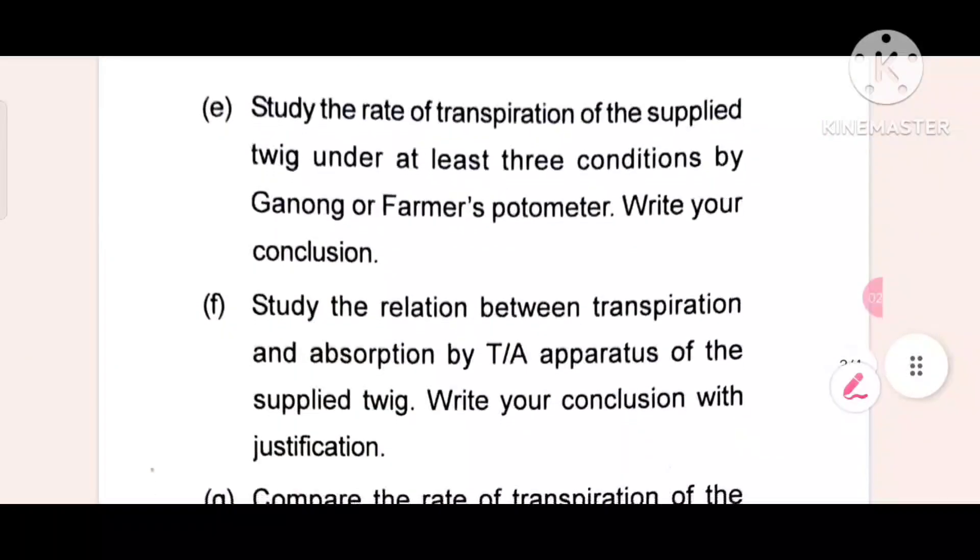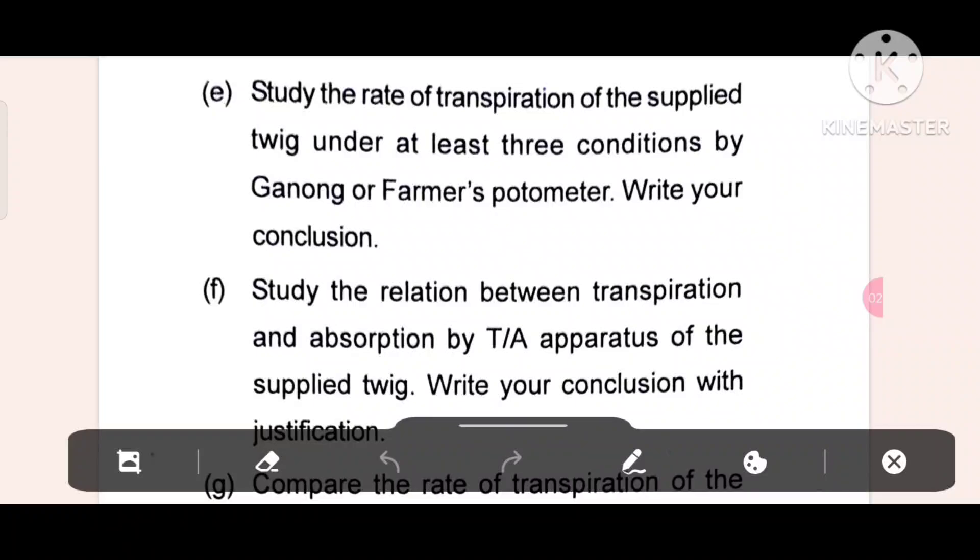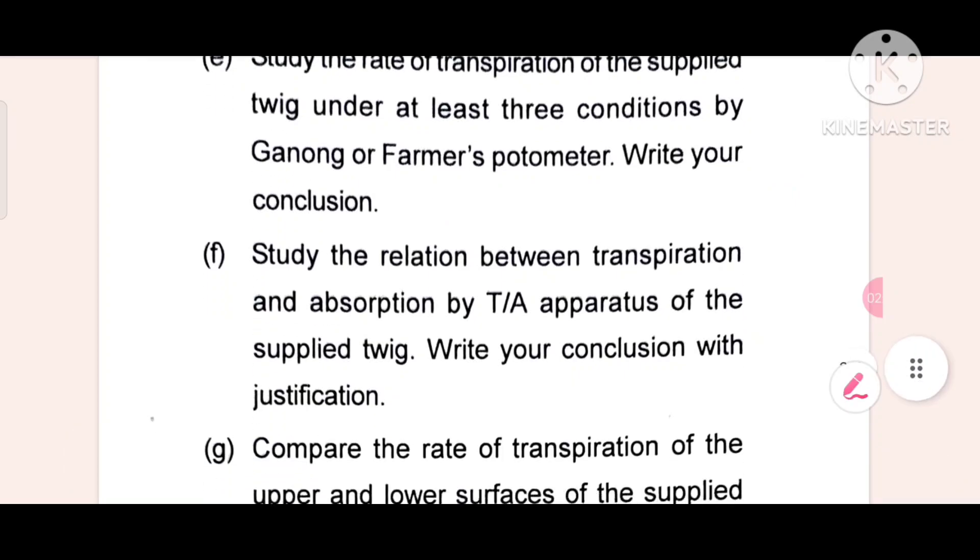Next, study the rate of transpiration of the supplied twig under at least three conditions by Ganong or Farmer's potometer. Write your conclusion.